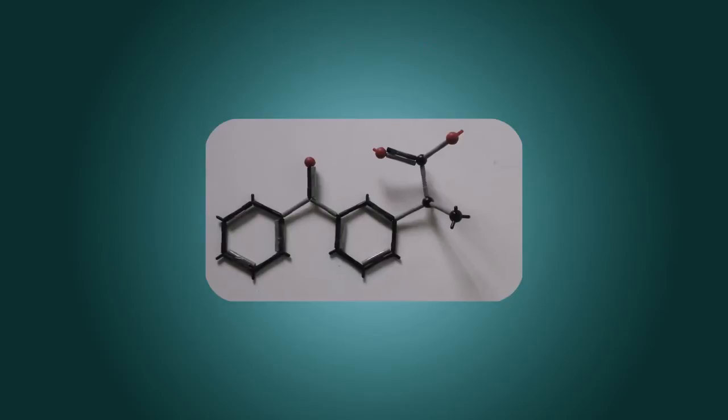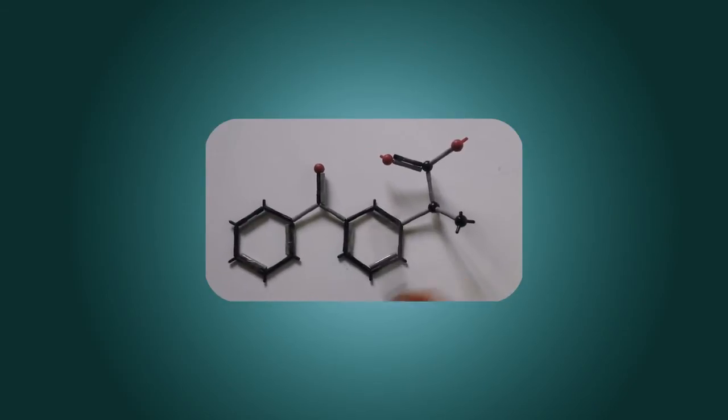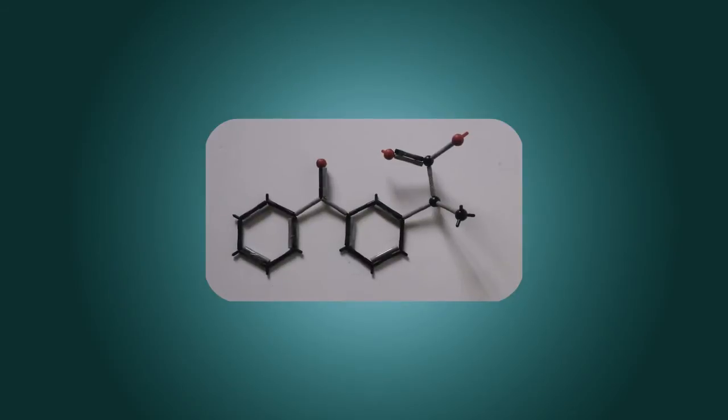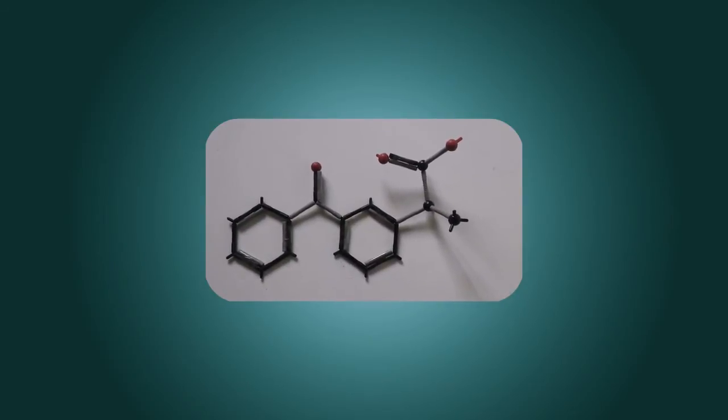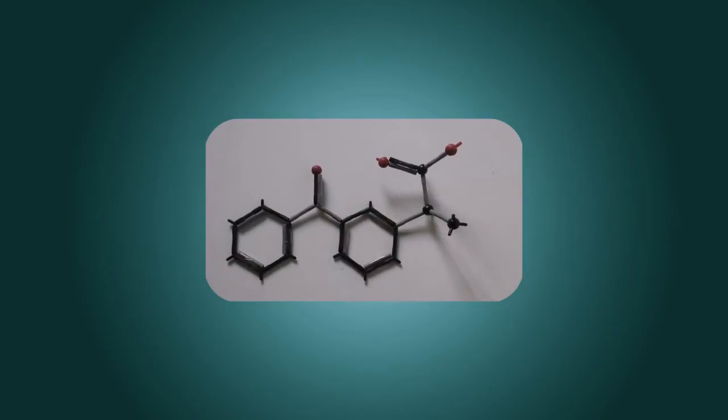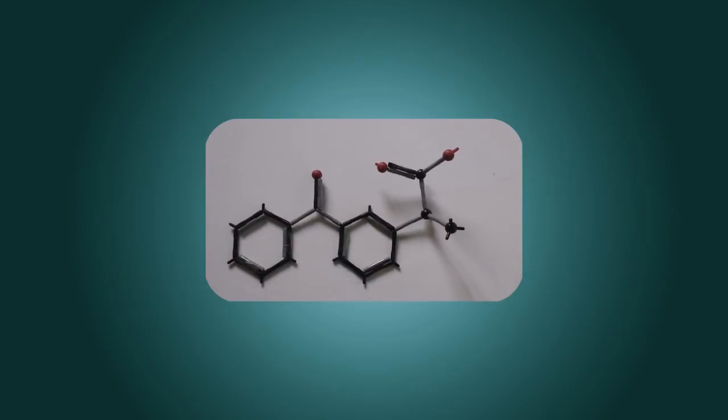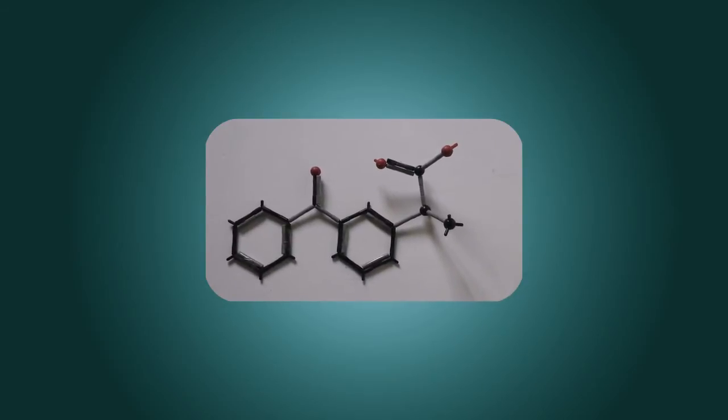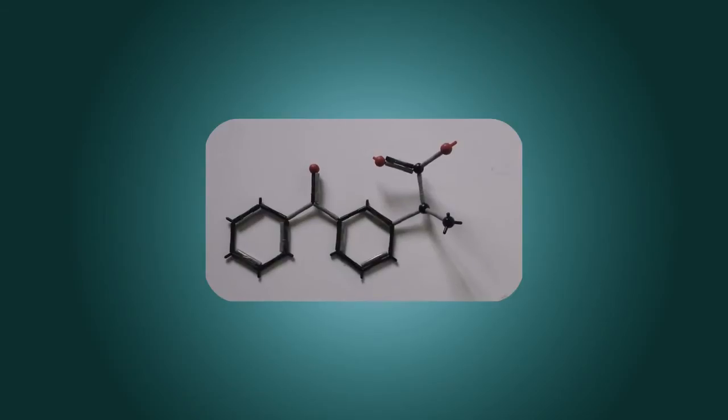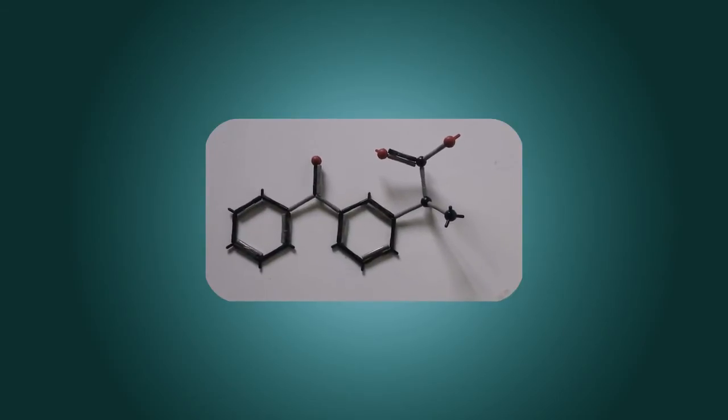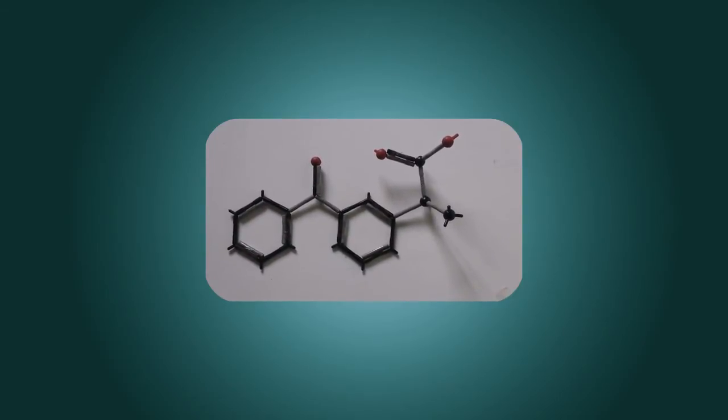Ketoprofen has only one chiral carbon which is this carbon. We call it chiral because it connects to four different groups which are carboxyl group, benzene ring, methyl group, and hydrogen atom. The other carbons are not chiral carbons because they don't connect to four different groups and at the same time they are sp2 hybridization.